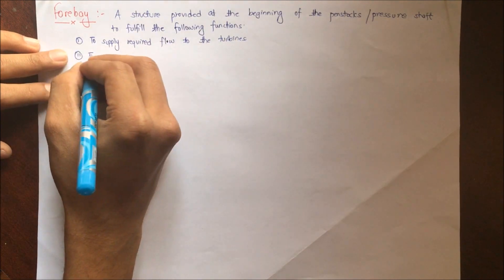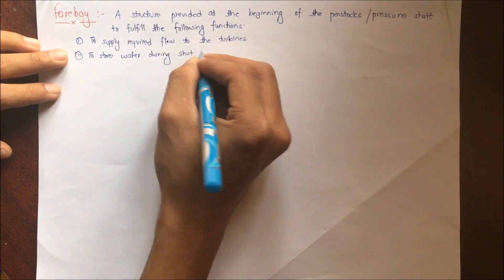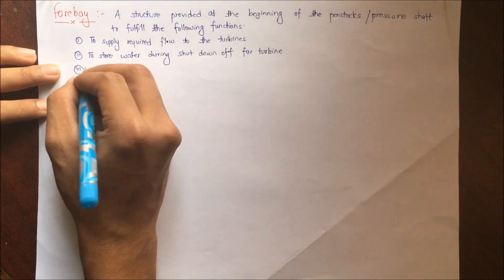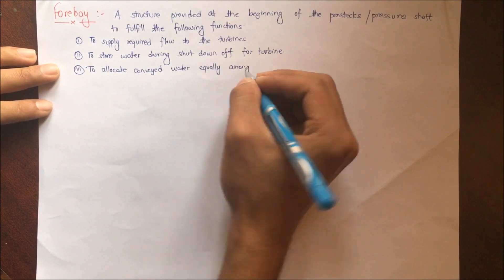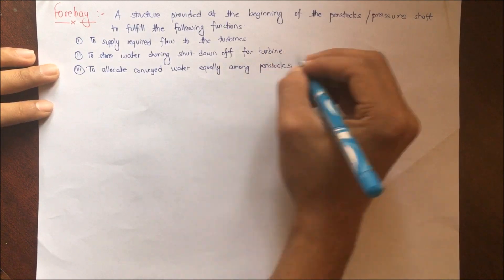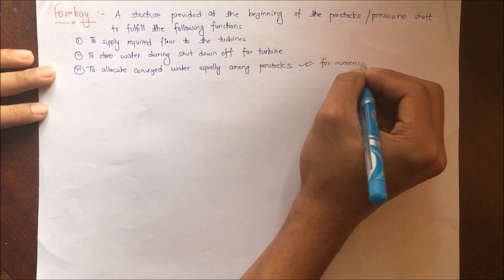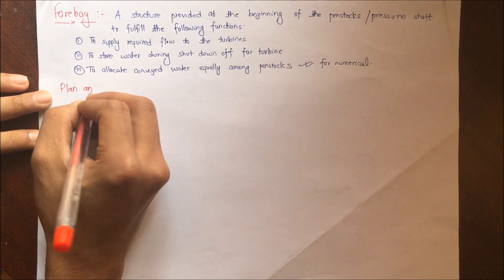What are the functions that have to be fulfilled? To supply the required flow to the turbines, to store water during shutdown of the turbine, and to allocate conveyed water equally among penstocks. There may be cases when there are more than one penstock.